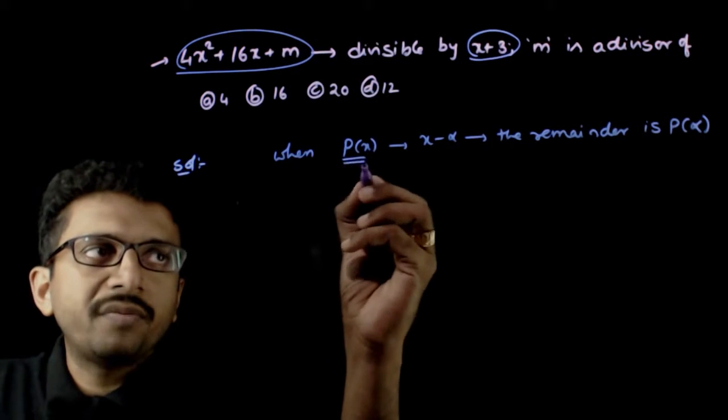This implies, if I take this as my P of x, so if this is divisible by x plus 3, that means x plus 3 is a factor of this. This implies P of minus 3 has to be equal to zero.